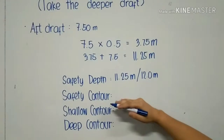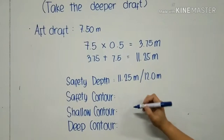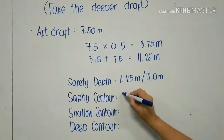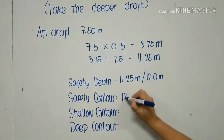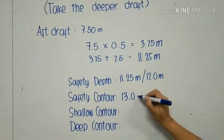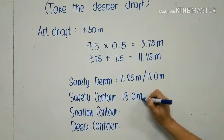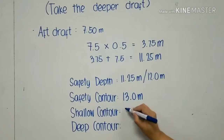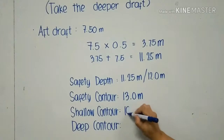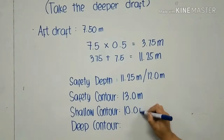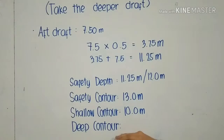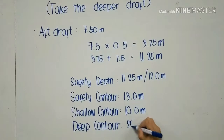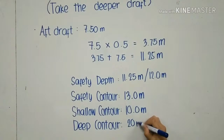Now that we have our safety depth, we shall fill in our safety contour, which is greater than the set safety depth, and we have 13 meters. Our shallow contour, which is less than the set safety depth, would be 10 meters. And our deep contour in this situation would be 20 meters.